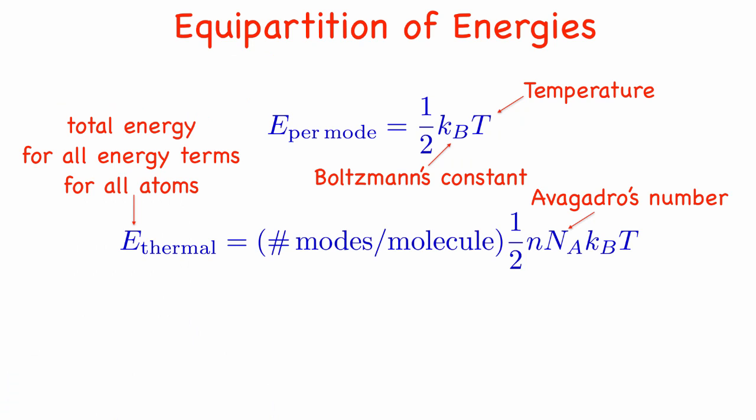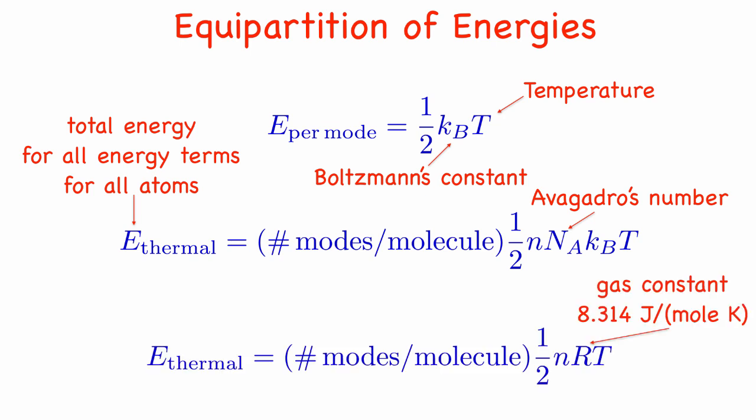If we add up the average energies of all the modes, we get the total thermal energy. If we know the number of moles in our sample, then we can express the same information another way. The total thermal energy is the number of modes per molecule times the number of moles times Avogadro's number times the average energy per mode. You might remember that Avogadro's number times Boltzmann's constant is just the gas constant, so we can also rewrite this formula in terms of the gas constant. If you remember the equation we used for heat capacities at the beginning of the quarter, then you will see that by counting the number of modes per molecule, we have a way of calculating the heat capacity of a substance.